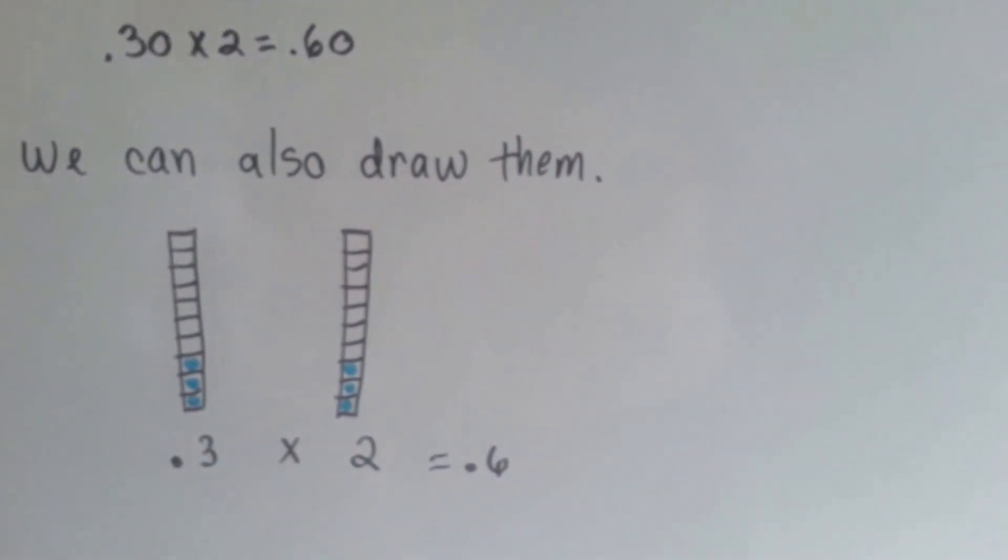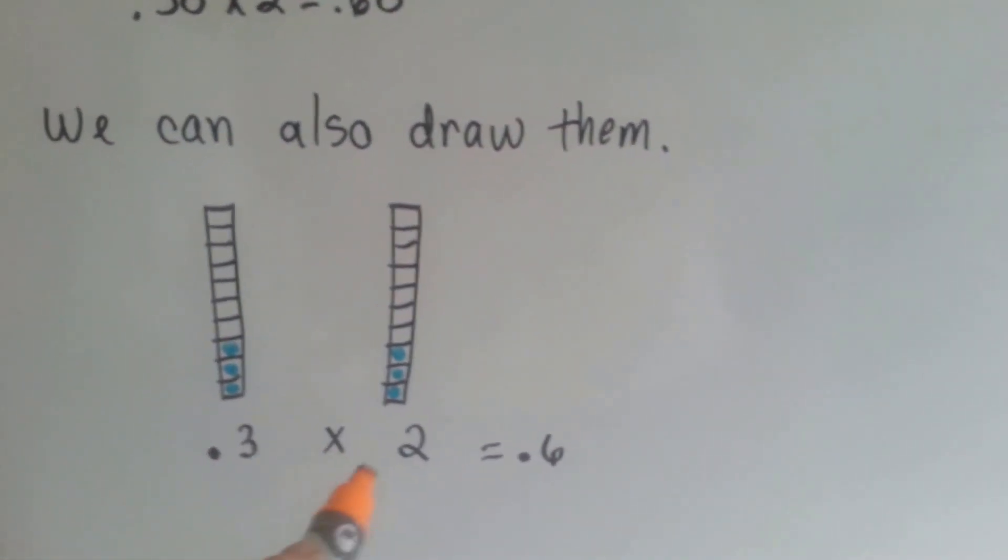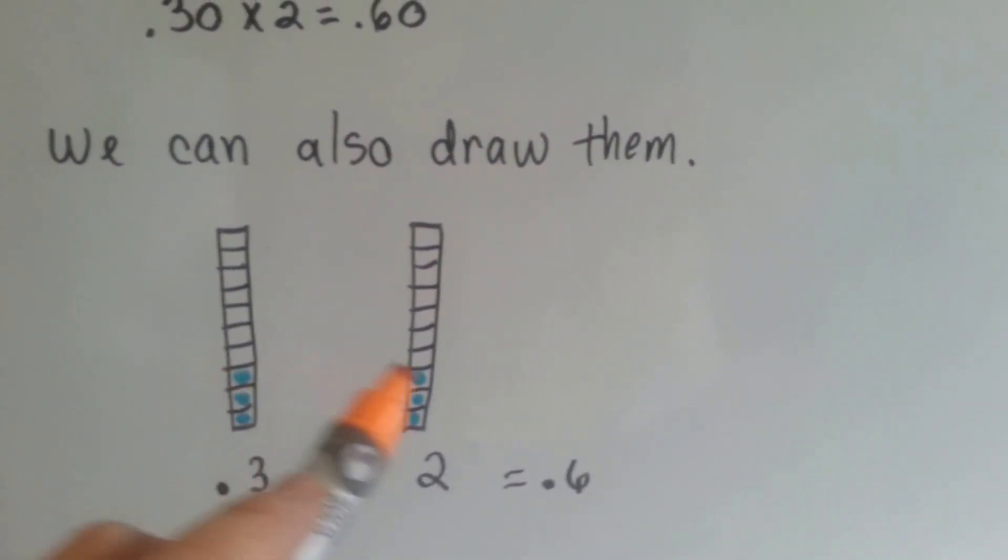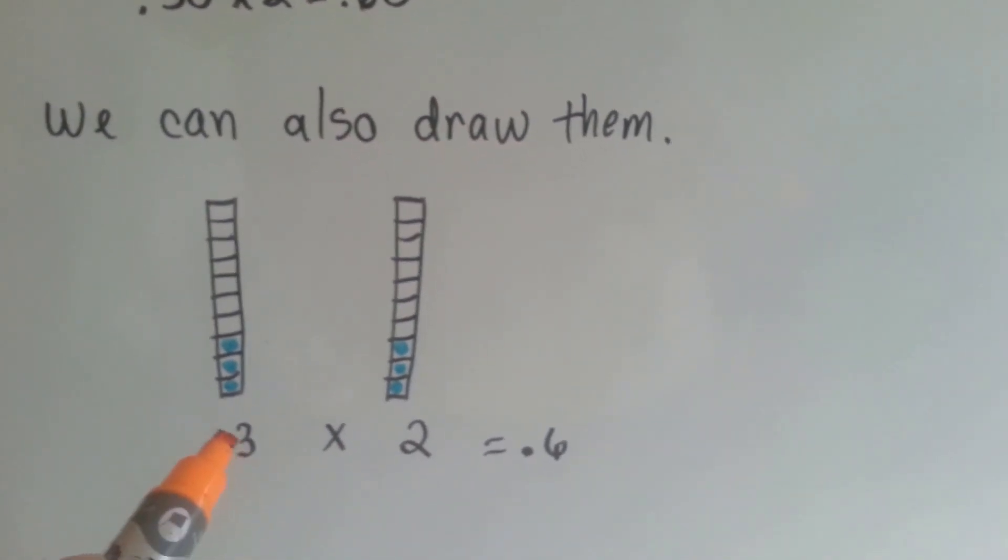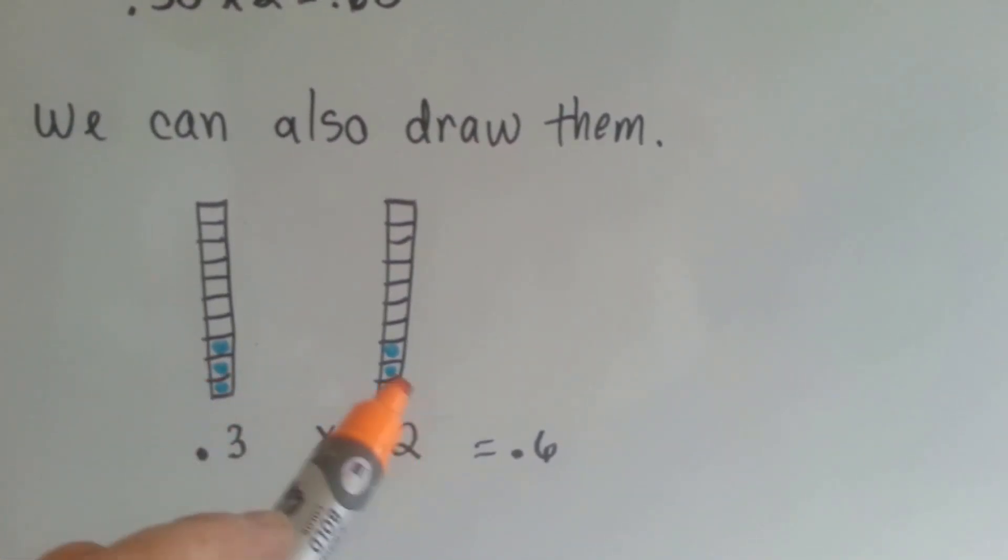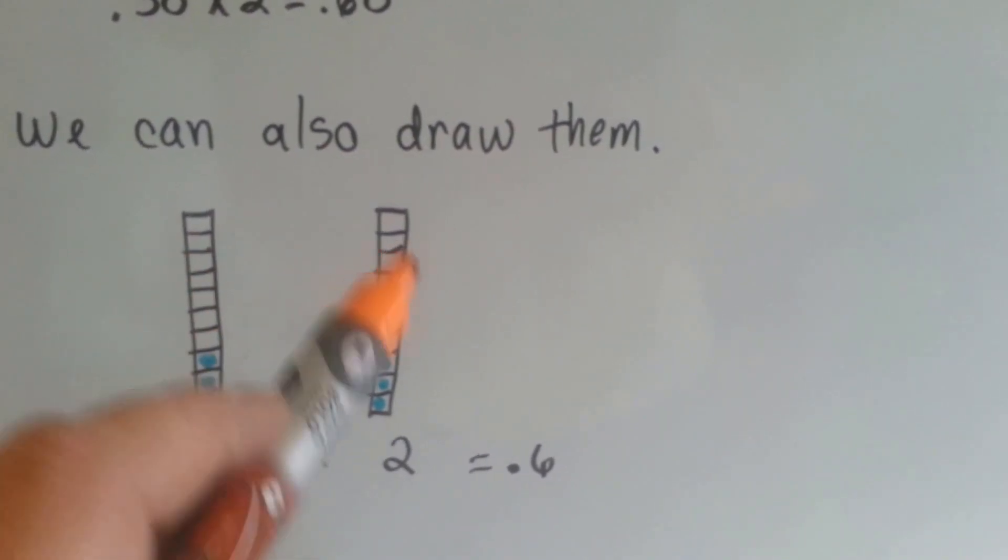We can also draw them. If we had 3 tenths times 2, that means we had 3 tenths 2 times, 1 time, 2 times. That would give us 6 tenths, see? 3 here and 3 here would be 6, and it's tenths.